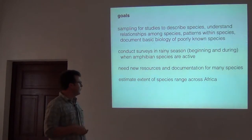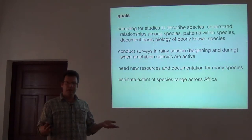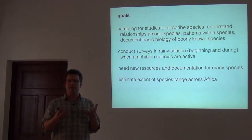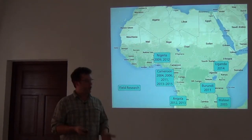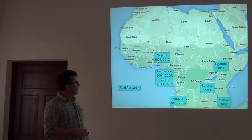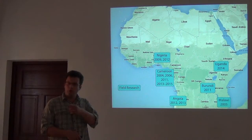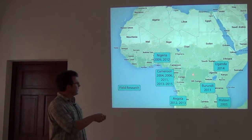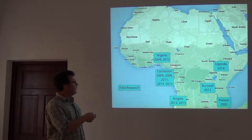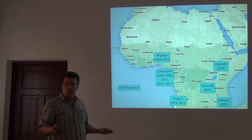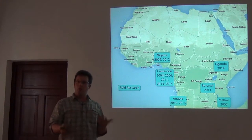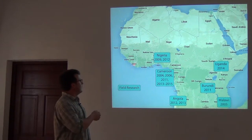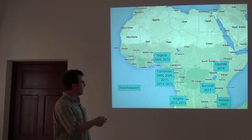If we're interested in patterns of biodiversity across Africa, all of these sampling events from my fieldwork are necessary to know how broadly species range. This is just the places I've worked across Africa in the last 10 years — we were talking about Malawi earlier. The reason we work across this landscape is because we really want to know: is the species we find here in Cameroon actually the same one we find in Uganda? In many cases, they're difficult to tell apart, so we need genetic resources from those countries.